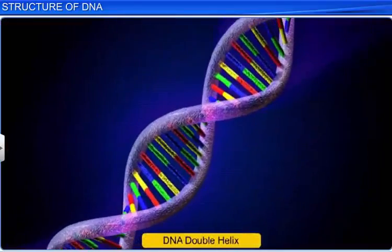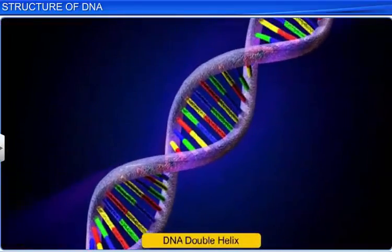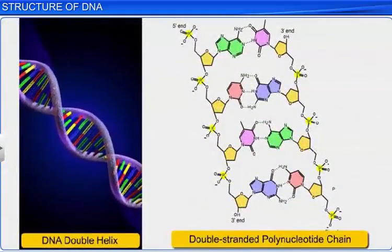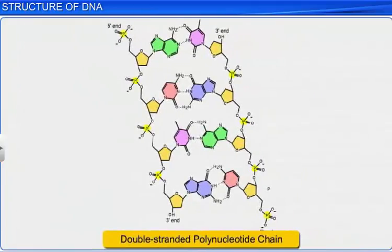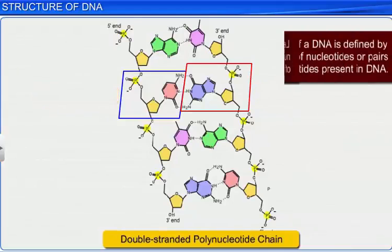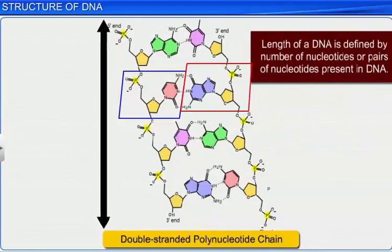DNA derives its name from deoxyribonucleic acid, a type of nucleic acid. Nucleic acids are made up of polynucleotide chains, which are formed by several nucleotides or molecules that make up the structure of DNA when bonded together. In fact, the length of DNA is defined by the number of nucleotides or pairs of nucleotides present in the DNA.